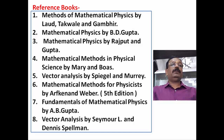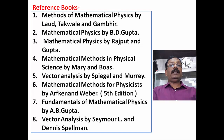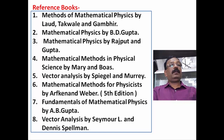The next reference book is Mathematical Methods in Physical Science by Mary Boas. There are more reference books also useful for studying this syllabus: Vector Analysis by Spiegel and Murray, Mathematical Methods for Physicists by Arfken — the fifth edition is very useful — Fundamentals of Mathematical Physics by A.B. Gupta, and last, Vector Analysis by Seymour Lipschutz and Dennis Spellman. Thank you.